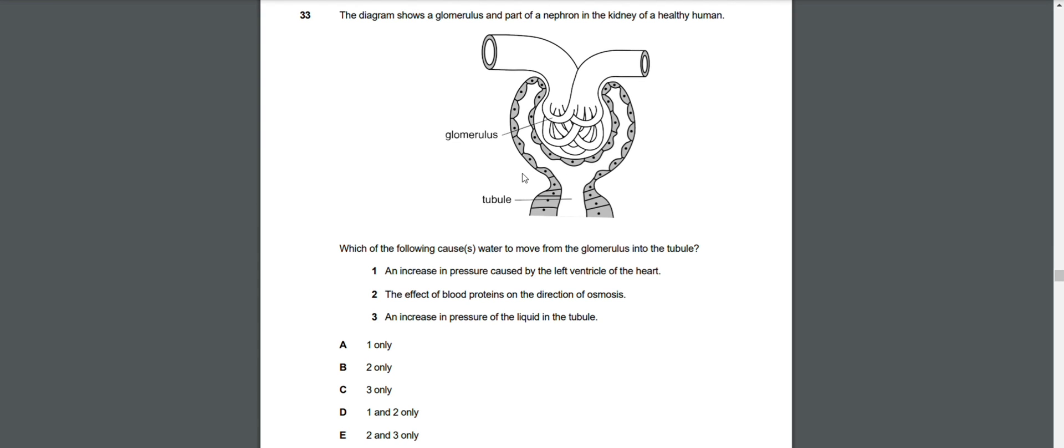Regarding an increase in pressure caused by the left ventricle of the heart - yes, it is correct. It causes water to move from the glomerulus into the tubule because the contraction, aka an increase in pressure in the left ventricle of the heart, causes the blood and the content in it like water to be delivered to the rest of the body like the kidney. Without this, the water would not even arrive in the glomerulus in the first place.